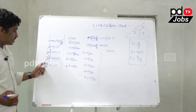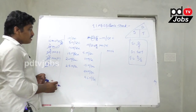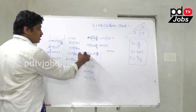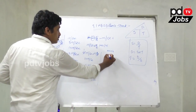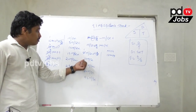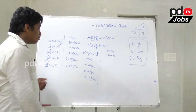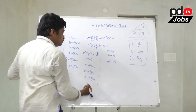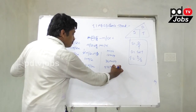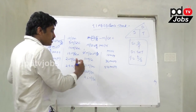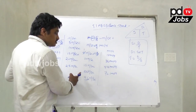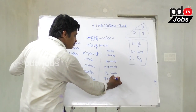Now converting m/s back to kmph — multiply by 18 by 5. 1 m/s: 1 into 18 equals 18 kmph. 2 m/s: 2 into 18 equals 36 kmph. 3 m/s: 3 into 18 equals 54 kmph. 4 m/s: 4 into 18 equals 72 kmph. 5 m/s: 5 into 18 equals 90 kmph.